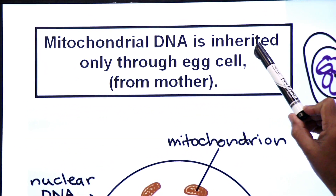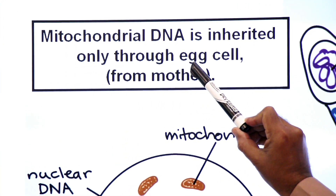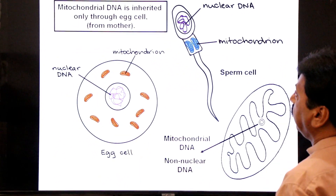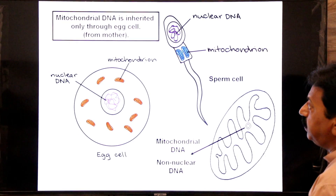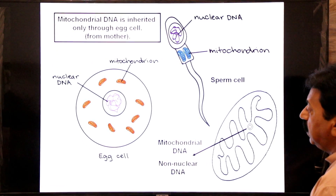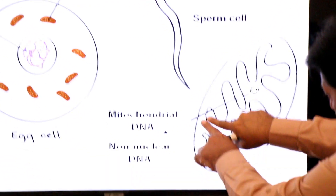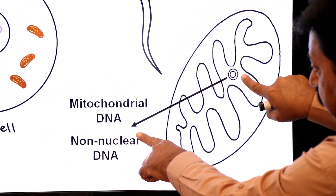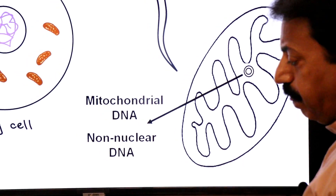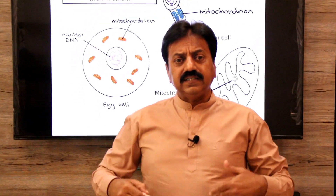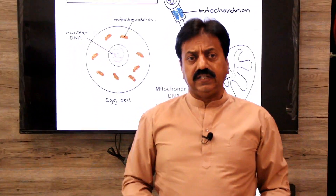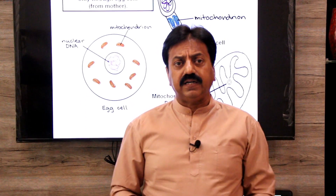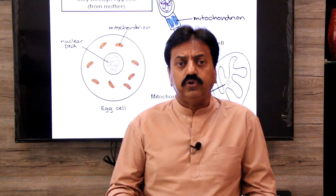Mitochondrial DNA is inherited only through the egg cell from the mother. The mitochondrial DNA is not contributed by the father — it is contributed only by the mother. This is the answer to our question: mitochondrial DNA is only passed from mother to offspring, not from the father.